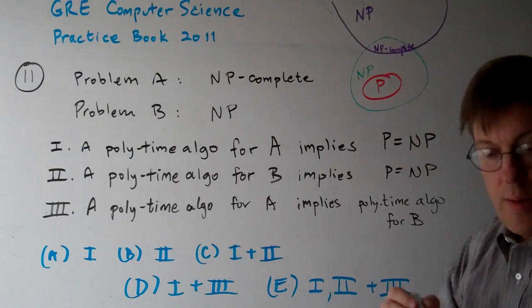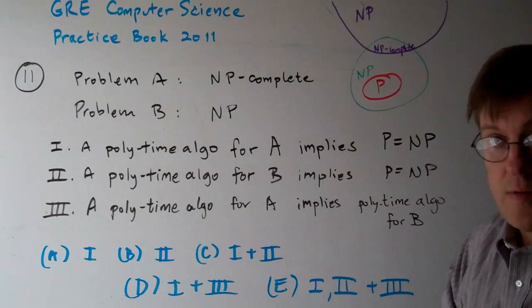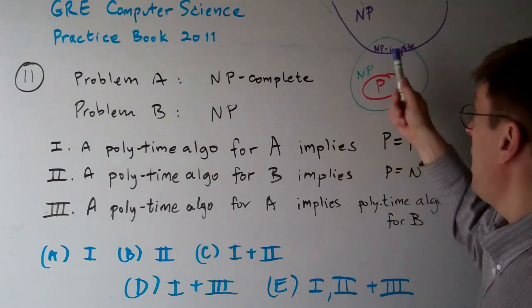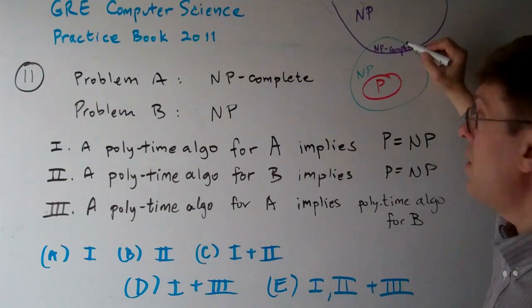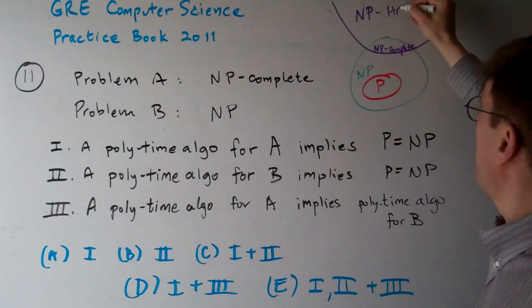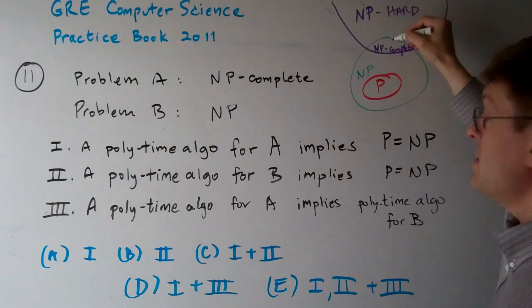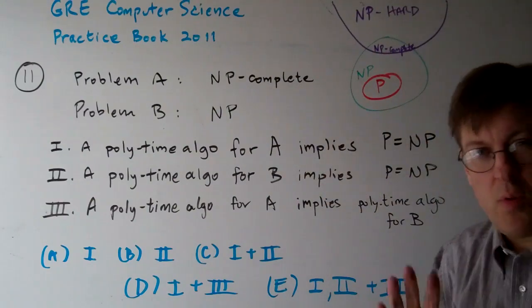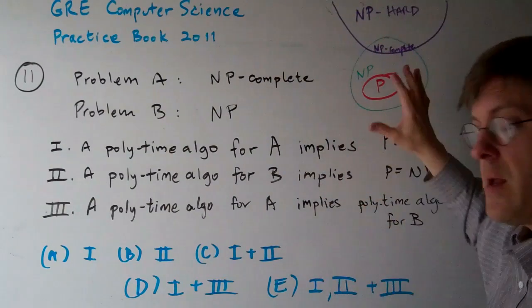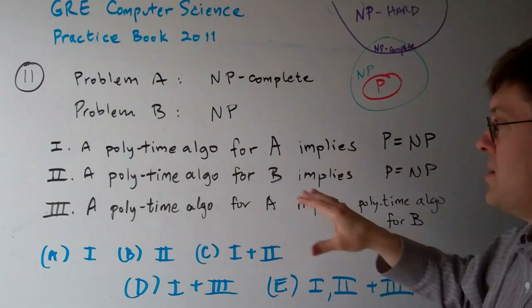So the set of problems that are non-deterministic polynomial time solvable are NP problems, but they're called NP-complete because they're the hardest ones and they can be reduced to each other. NP-hard are problems that are possibly NP and possibly not NP. Anyway, that's not part of this problem. We won't go into a broad discussion of it. But basically, let's take a look at this.